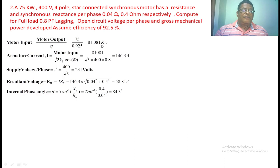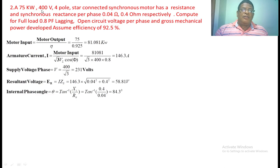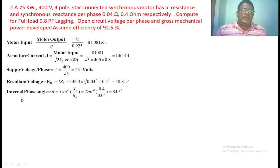Now we find the current: current equals motor input power divided by root 3 times VL times power factor. Since it is star connected, the voltage given is 400 V and per phase voltage becomes 400 by root 3, giving 231 volts. Next, resultant voltage ER equals I into Zs, substituting values we get 58.81 volts. The internal phase angle theta equals tan inverse of Xs by Ra, substituting the given values we get 84.3 degrees.